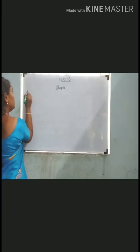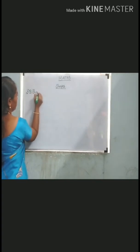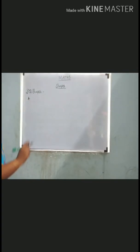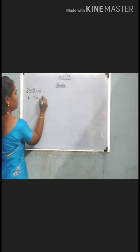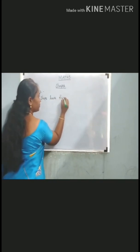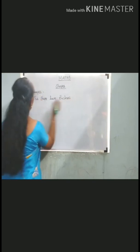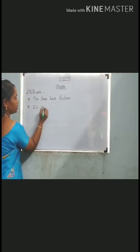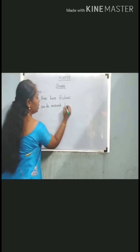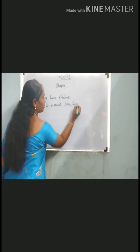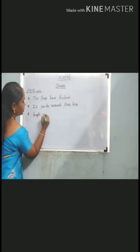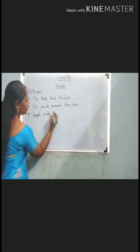Now see the 3D shapes. These shapes have thickness, and they can be measured in three faces: length, width, and height.